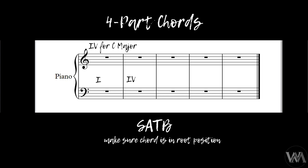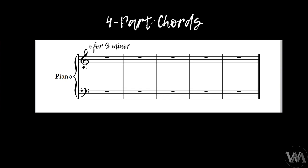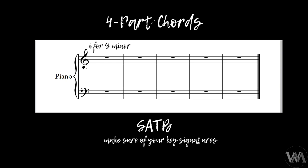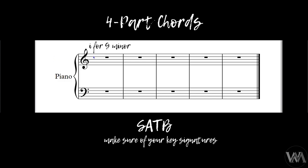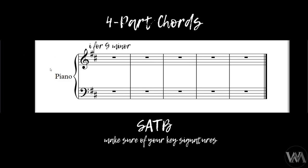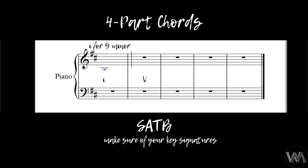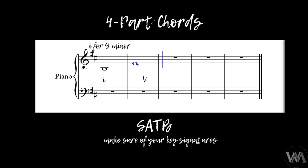Now let's look at B minor — we are going to write the dominant chord in B minor. The first thing we need to remember is that B minor has a key signature with two sharps: F sharp and C sharp. The tonic of B minor is B, and the dominant goes B, C sharp, D, E, F sharp — so we start on F sharp and build the triad: F sharp, A, C sharp.